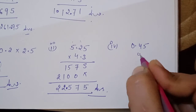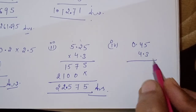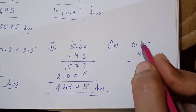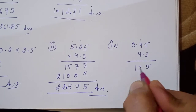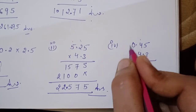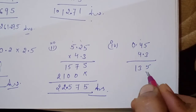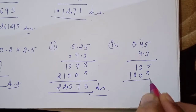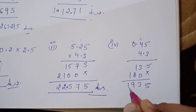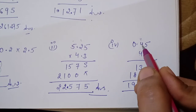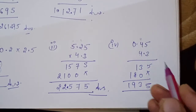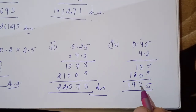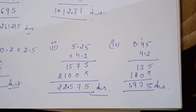Get the sum: 5, 7, 5, 2, 2. Count decimal places — both sides — one, two, three total. Count from the right: one, two, three, then place the decimal. That gives 22.575 as the answer. Now 0.45 × 4.3: 3×5=15, 3×4=12, carry 13; 4×5=20, 4×4=16, 17, 18. Sum up: 5, 3, 9, 1. Three decimal places — count one, two, three — giving 1.935.